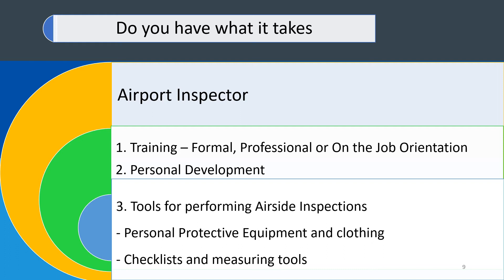Training can be in the form of previously achieved formal education certificates, or a professional certificate directly related to the functions performed on duty, or on-the-job orientation offered to personnel performing under the supervision of qualified officers. In addition to training, tools for performing the airside inspections must also be provided, such as personal protective equipment and clothing, checklists, measuring tools, and any other item required to perform that particular inspection.